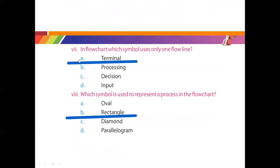Part number 7 is: in a flowchart, which symbol uses only one flowline? Students, we have discussed flowchart symbols in detail — the terminal symbol uses only one flowline. Part number 8: which symbol is used to represent a process in the flowchart? The rectangle shape is used to show processing, calculations, and operations. So option B is the right option. The rectangle symbol is used to show the process and calculations in the flowchart.